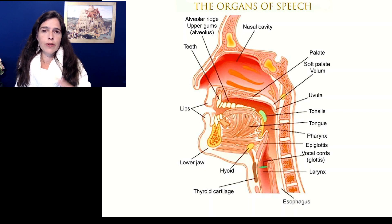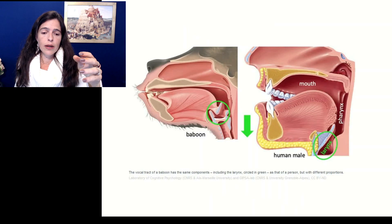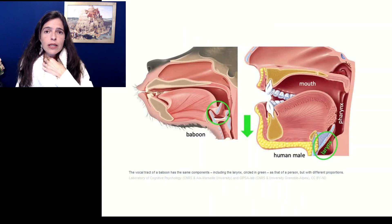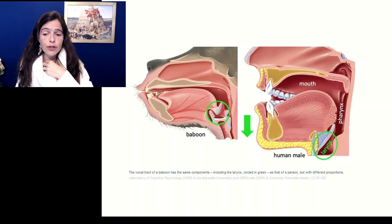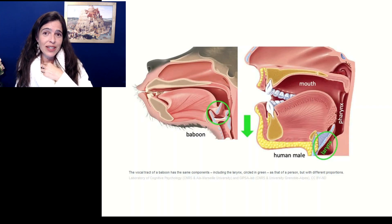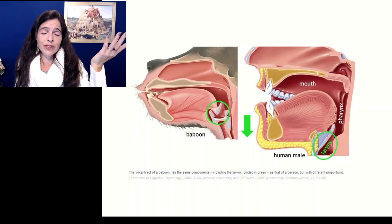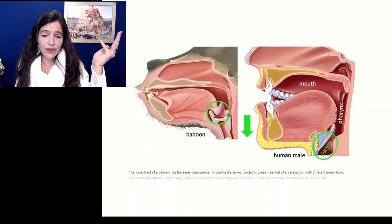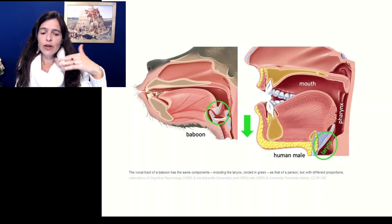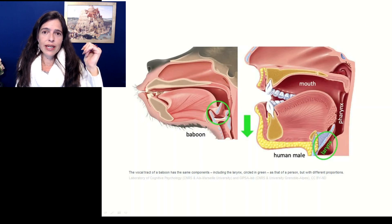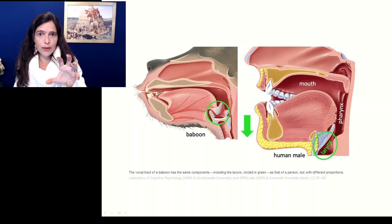Some people say we came from primates as Darwin would say, and primates have a larynx that is very high up, while in humans it descends during childhood. But they've discovered that even some animals like the koala have a low larynx as well and are incapable of language. So obviously that's not the main factor at all. It's all very complex and intricate and connected together.